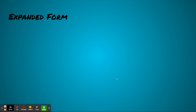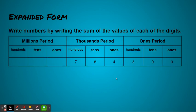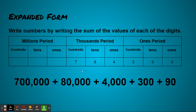The final way that we're going to talk about is looking at expanded form. Expanded form is writing the numbers by writing the sum of the value of each of the digits. So again, I still have my same number, but each one of these digits represents its own value. So when I write it in expanded form, I stretch out those values and those digits and I write it like this.